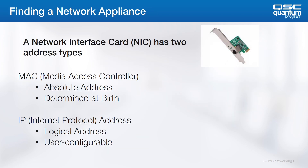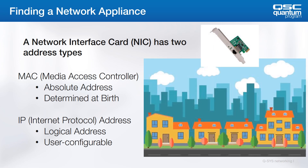Network appliances typically have two types of addresses. There's a Media Access Controller, or MAC address. This would be like the absolute GPS coordinates of a place. It is globally unique. This address is programmed into the device when it is manufactured, and it's not configurable from that point forward.